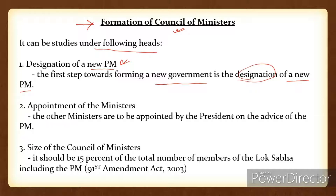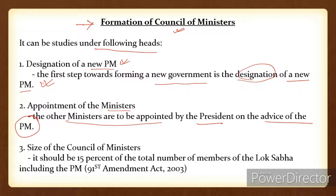Point number two is appointment of the other ministers. Now that the PM has been appointed, other ministers are appointed. As we have already seen in our previous lecture, the other ministers are appointed by the President on the advice of the Prime Minister.